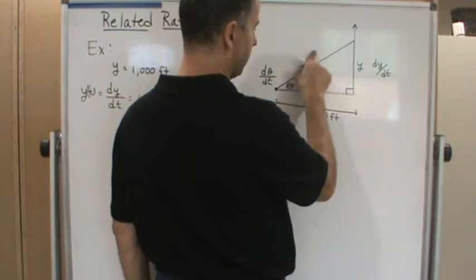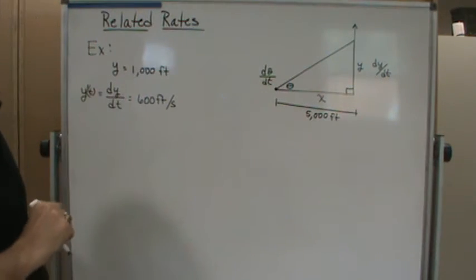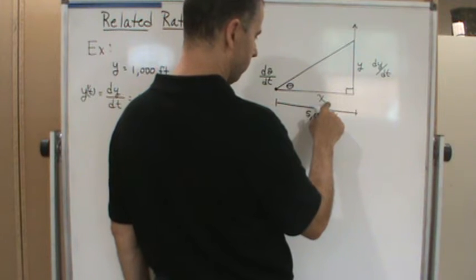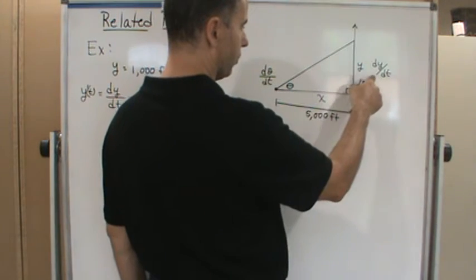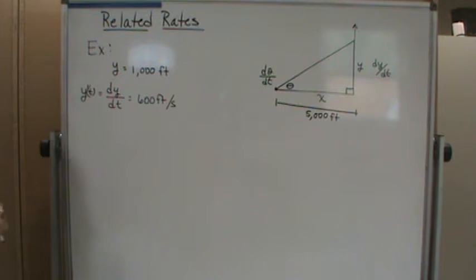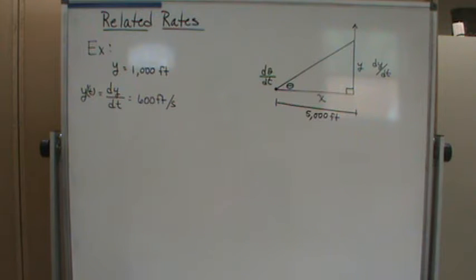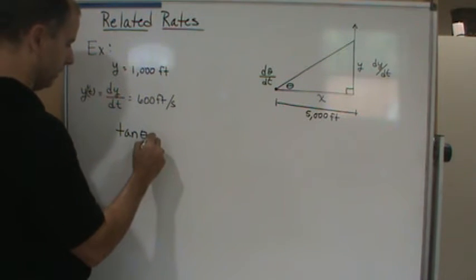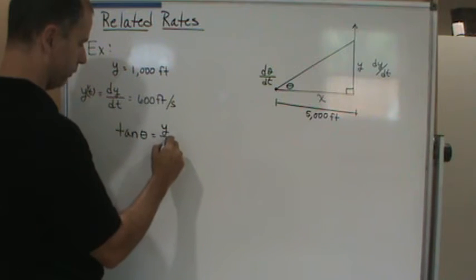x is not changing because the camera isn't moving, so only two things are changing: y and θ. We need a formula that relates θ and y but also includes x. The equation that will do it is tangent: tan(θ) = y/x.